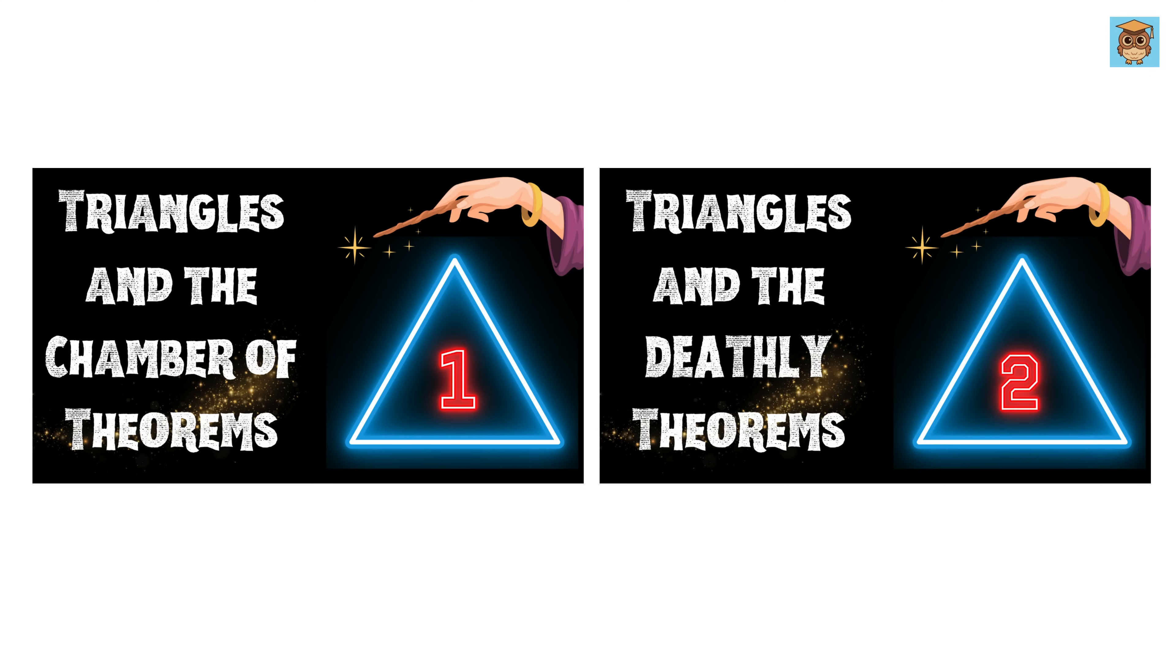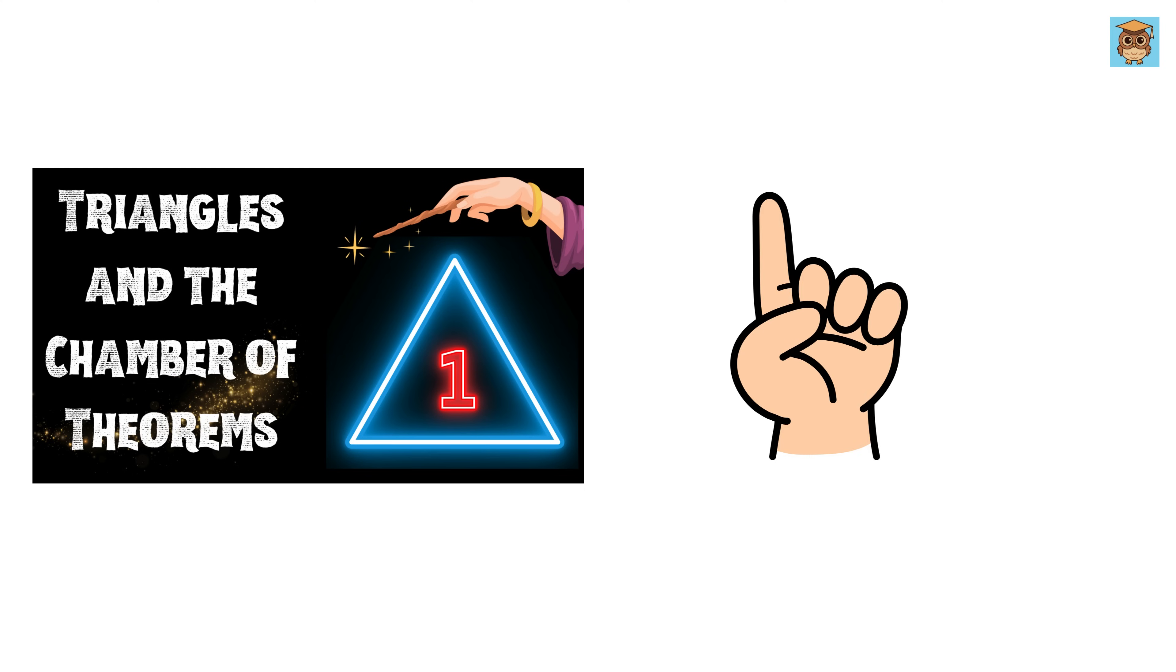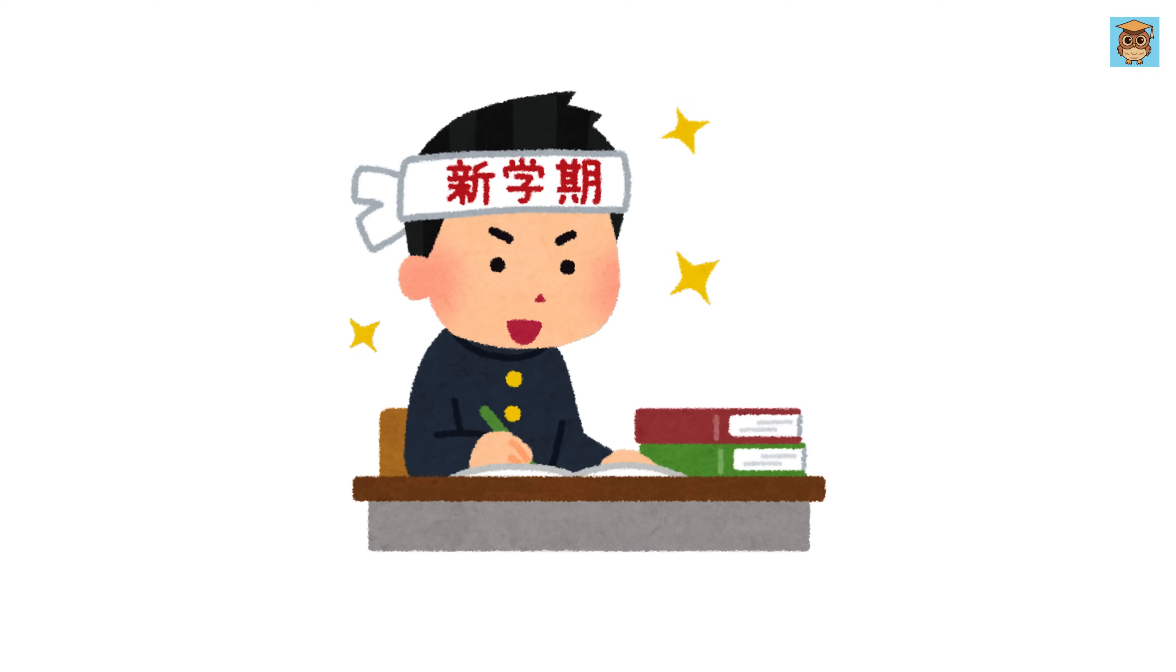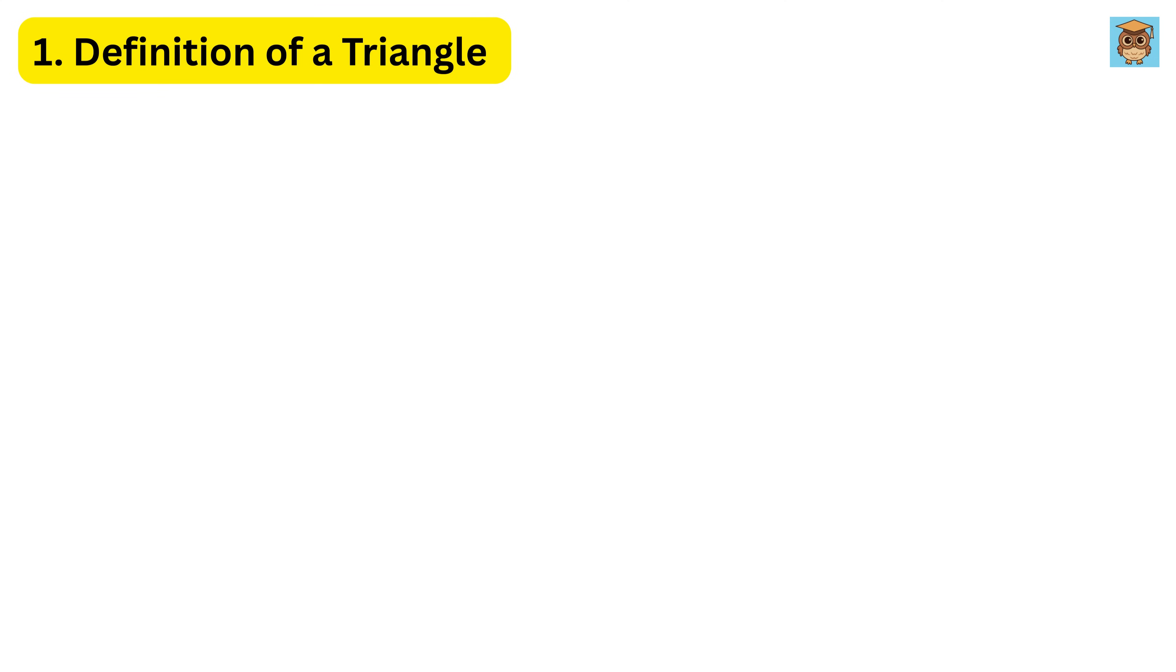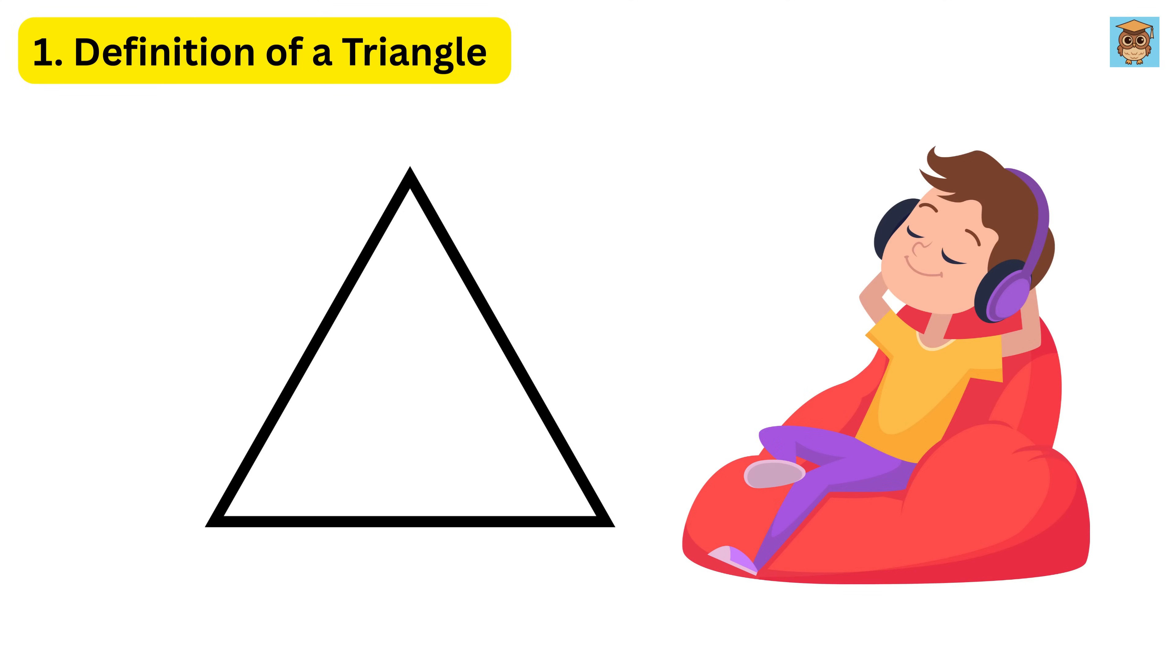This video will be divided into two different parts and this is the first part. Let us begin. 1. Definition of a Triangle. A triangle is a shape that has three sides, three angles, and three corners.